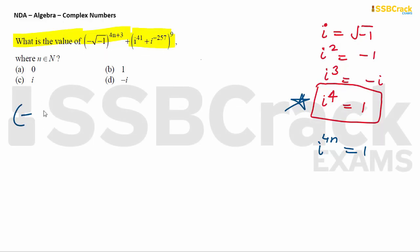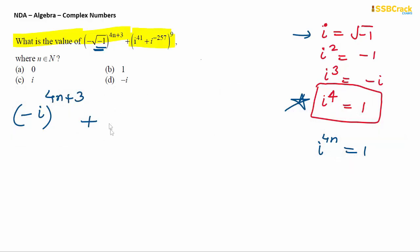This means any multiple of 4 as a power of i will give value 1. So whenever you have to evaluate any expression which consists of iota, meaning imaginary number is involved, remember this fact: i raise to 4 equals 1. Now in your given expression we have minus of i, because root of minus one is i, right? So minus i raise to 4n plus 3 plus i raise to 41 can be written as just i because 41 is 40 plus 1, 40 being a multiple of 4 gives value 1.